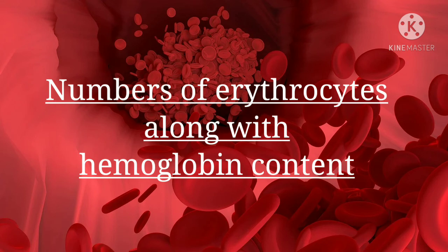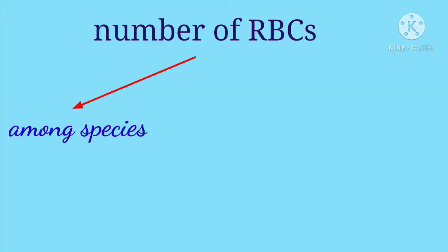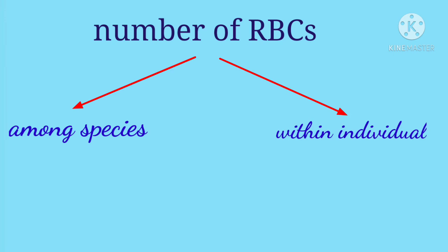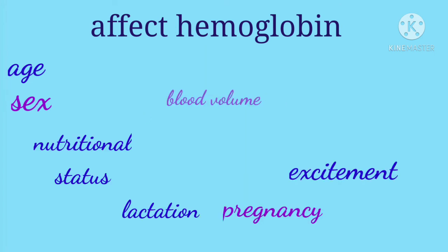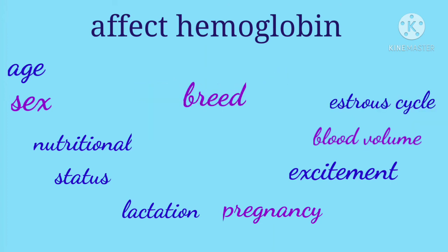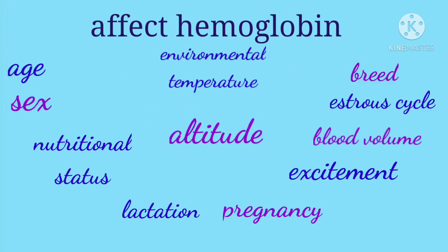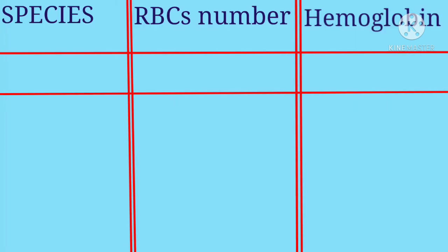Let's study about the numbers of erythrocytes along with hemoglobin content in different species of animals. The number of RBCs varies greatly among the species and also within individuals of the same species. The factors which affect hemoglobin concentration are age, sex, nutritional status, lactation, pregnancy, excitement, blood volume, stage of estrus cycle, breeds, environmental temperature, altitude and other clinical factors. Let's see the RBC number in 10⁶ per microliter and hemoglobin in grams per deciliter of different species.